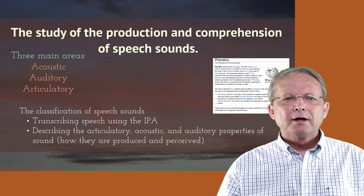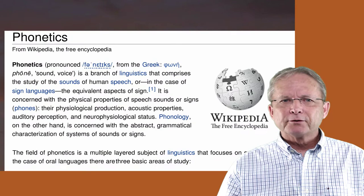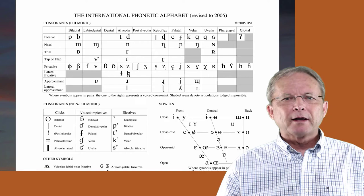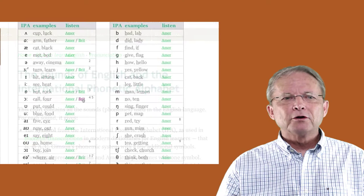After completing this unit, you should be able to identify the major sound categories of English and pronounce words based on how they are represented in the International Phonetic Alphabet, which is used by dictionaries, language textbooks, and Google Translate. You should also develop a good understanding of the relationship between the sounds of English and the spelling system.